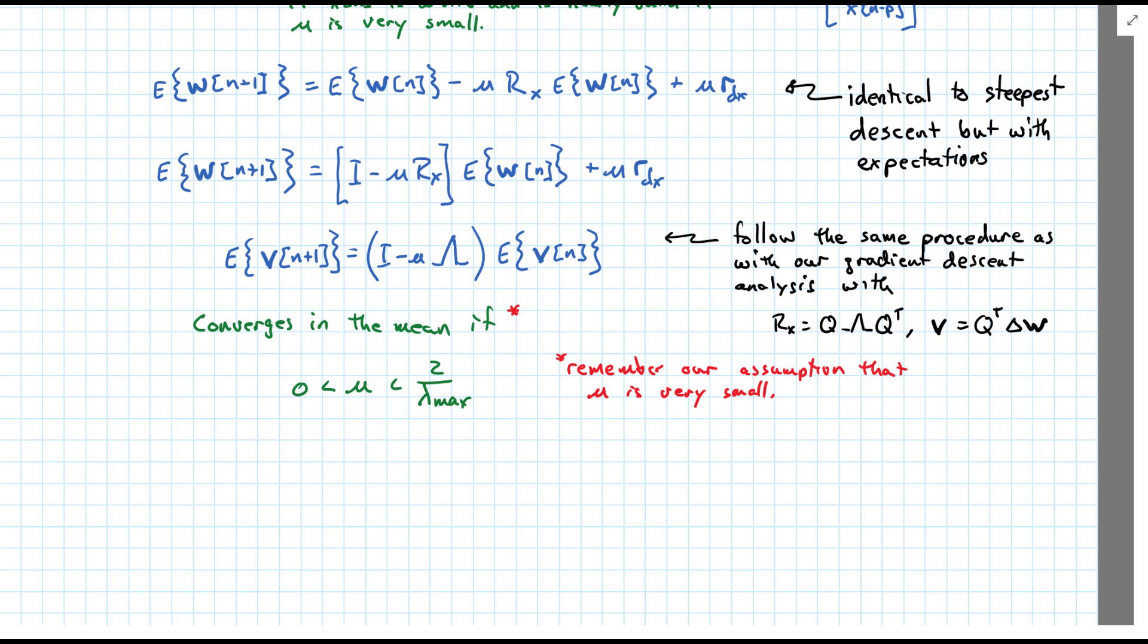At every single weight update, it's going to jump around. It's going to jump around because we don't have the true expected value of the error times the weight. What we have will be just one random value from a sequence, if you will. Or a composite random variable whose expectation is 0. But, it's not guaranteed that any value is going to be 0. In fact, it won't. And so, the larger mu is, the more we jump around. Even when we're down around the final solution. We'll do some simulations later.